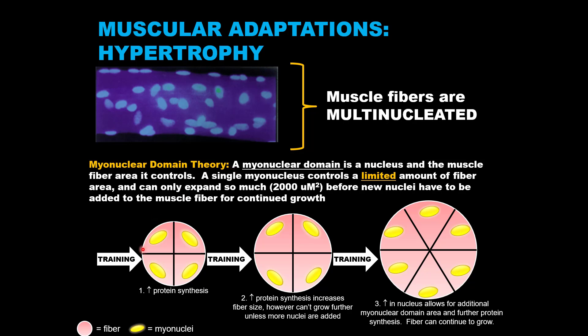Looking at this first figure on the left, we can see this muscle fiber cross-section is separated into four areas divided by a black border line. Each of these four areas is a myonuclear domain controlled by a single nucleus, denoted by these yellow ovals. Now imagine you are resistance training, adding mechanical stress to the muscle continuously.